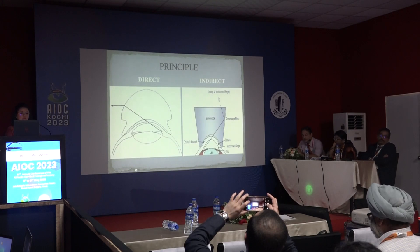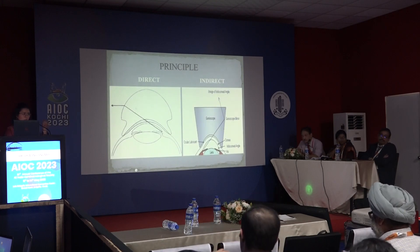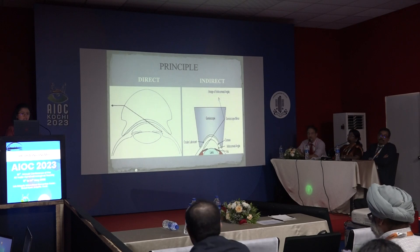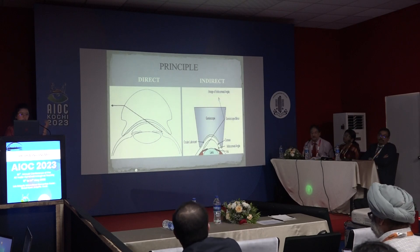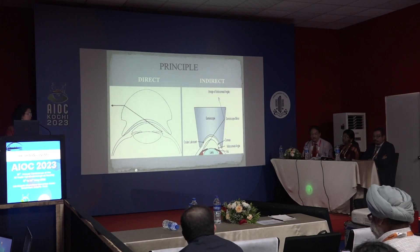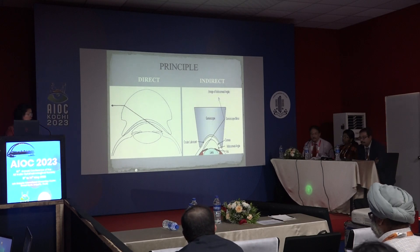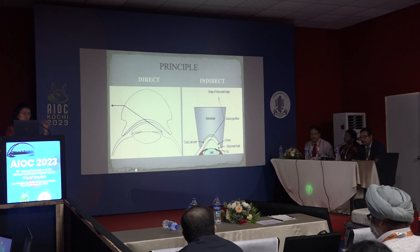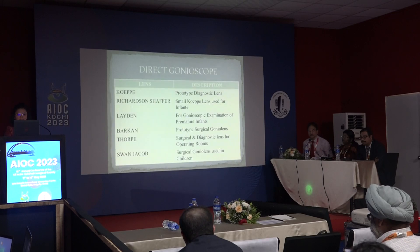In the direct gonioscope, there is a gonio lens sitting on the eye and you can directly visualize the angle you are seeing — so if you are visualizing the superior angle, you will see the superior angle. In the indirect gonioscope, which uses a mirror, if you are looking at the superior angle the mirror will reflect and show you the inferior angle.